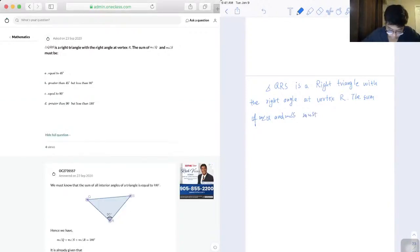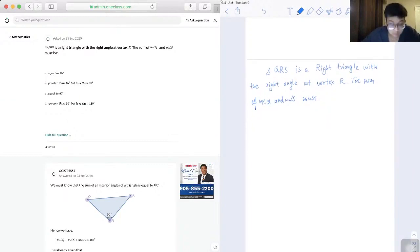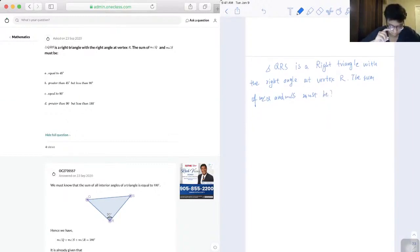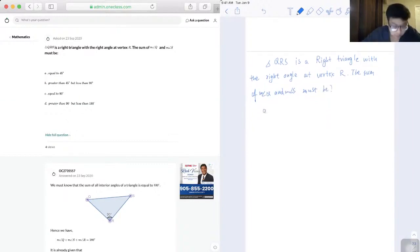Okay, so we got four options. First one is 45, the second one is greater than 45 but less than 90, C is 90, and D is greater than 90 or less than 90.